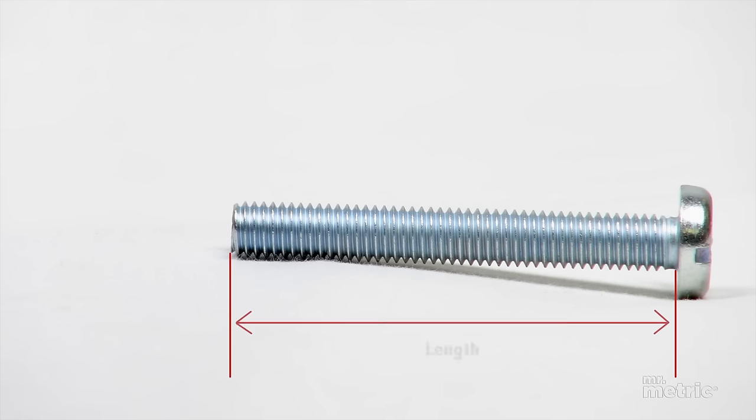The final measurement is the length of the metric fastener. This is the last number to appear in the call-out and generally refers to the length from the bottom of the fastener's head to the end of the fastener.